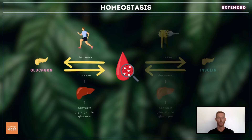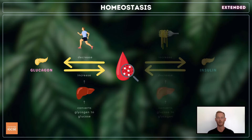When the body expends more energy, for example during exercise, blood glucose levels fall, triggering the pancreas to secrete another hormone called glucagon. Glucagon causes blood glucose levels to rise as it stimulates the liver to break down some of its stored glycogen into glucose. The glucose enters the bloodstream and levels return to the set point once again.